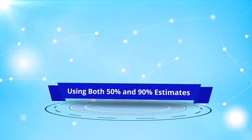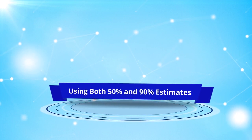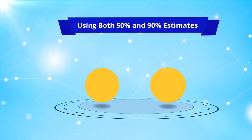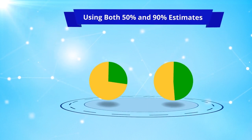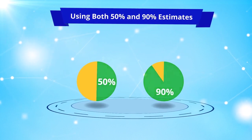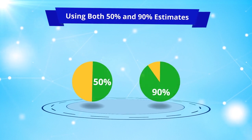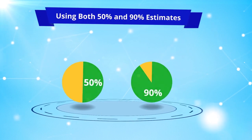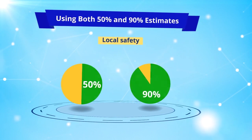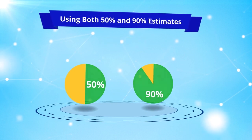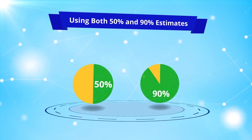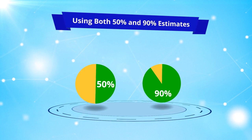Finally, there is the practice of using both 50% and 90% estimates. When we use both the 50% and 90% confidence estimates, we can come up with a value or range called the local safety — where our estimates will probably fall somewhere between what we think is 50% most likely to happen and 90%.